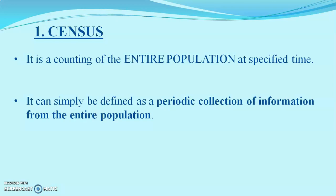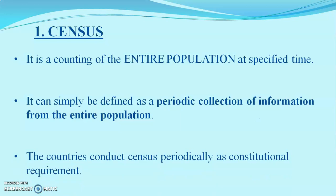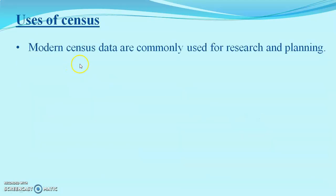Periodic means there will be a particular interval period between two censuses; otherwise it will not be a census. So census is a periodic collection of information from the entire population. Countries conduct census periodically as a constitutional requirement, but census can be done for anything — for collecting any data from an entire population.